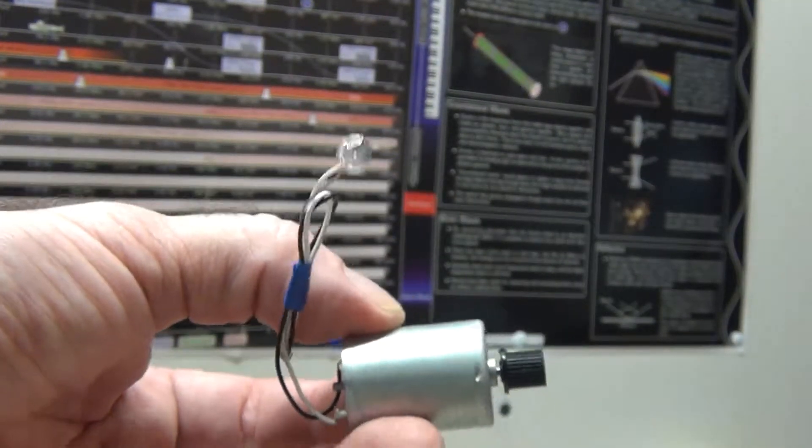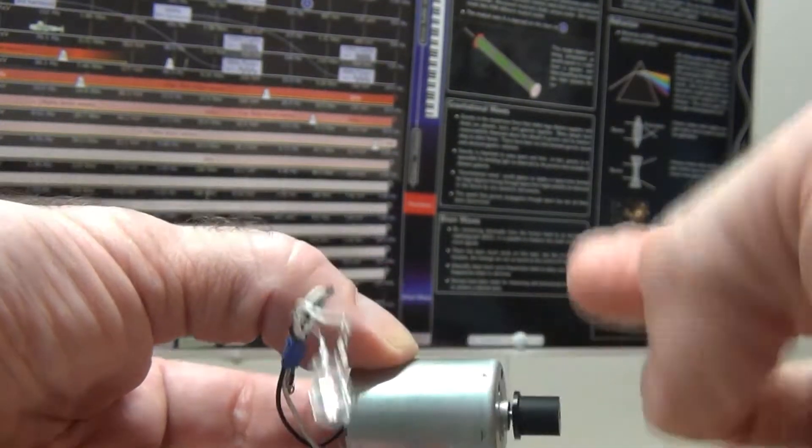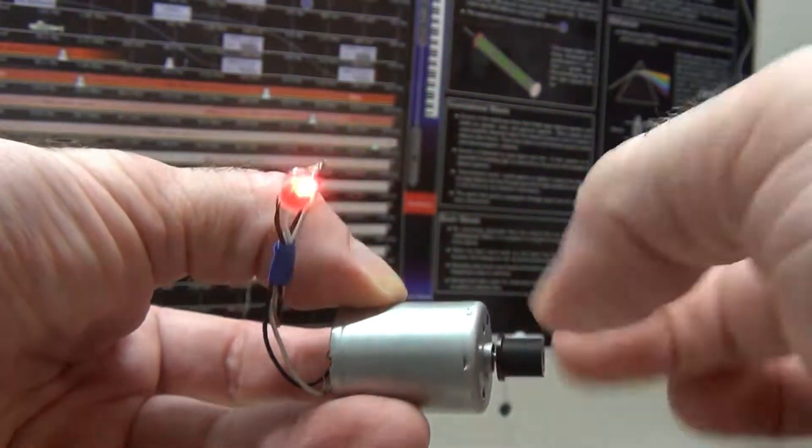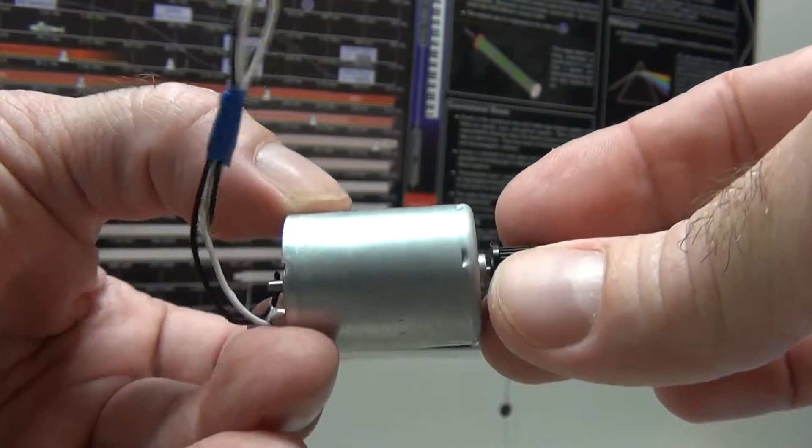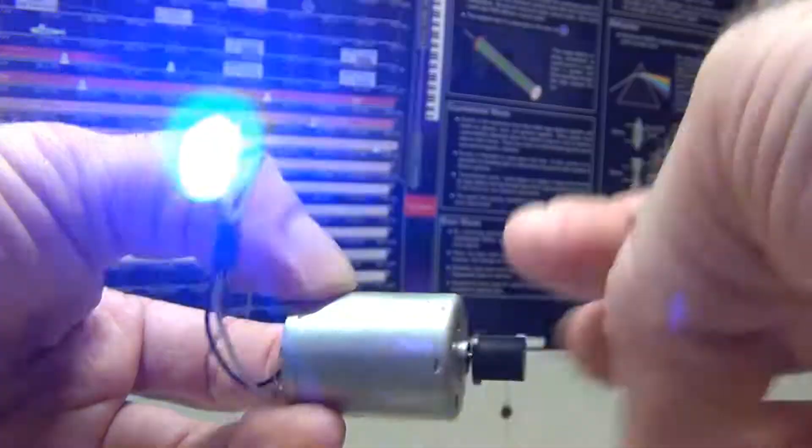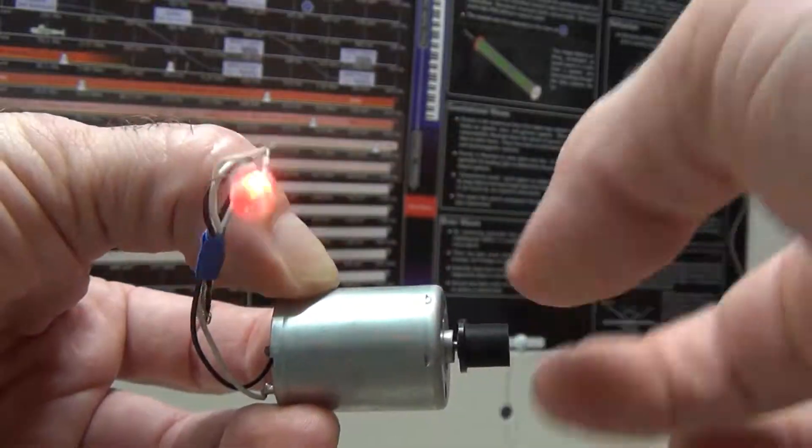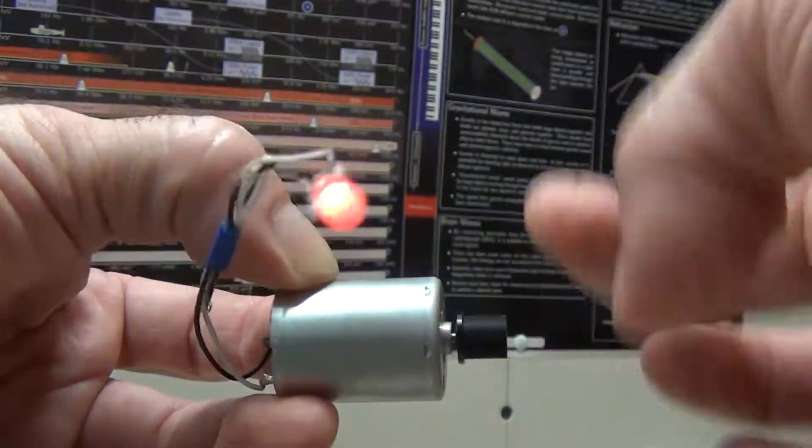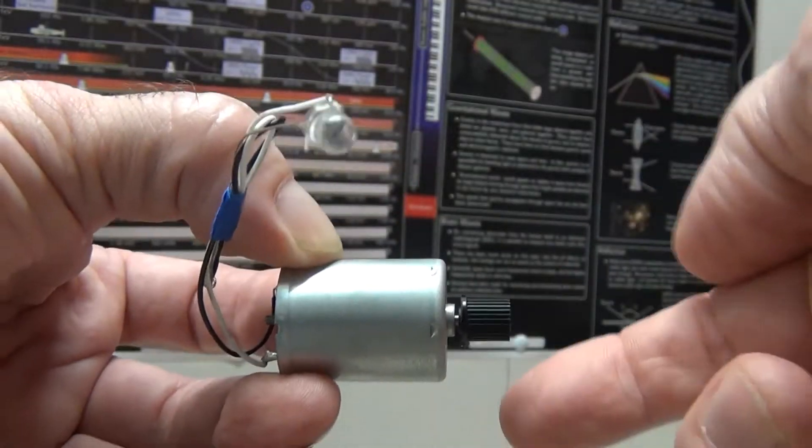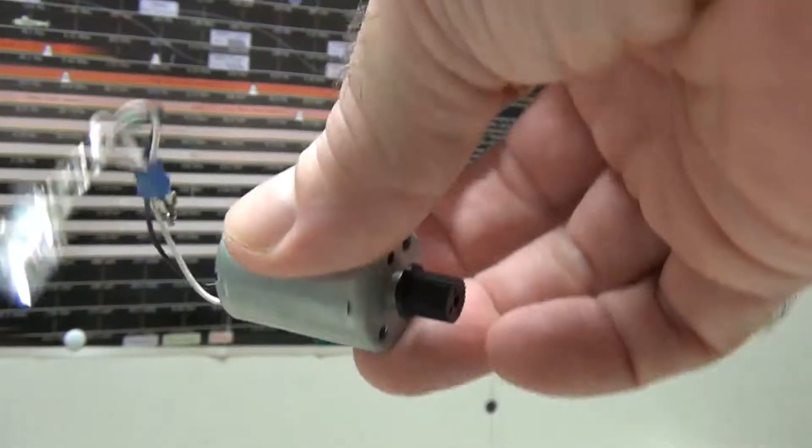This little DC motor I took out of a printer right here can produce up to seven volts. Once you get this thing spinning, the magnets inside and the copper coil, the biggest magnet in the world won't make electricity unless you turn it. So it's how clever are you to get that spinning. You know if you have a waterfall that's great. You can just put a wheel on this thing. Put a fan on here and you have yourself a wind turbine.